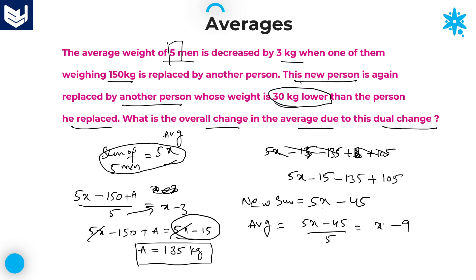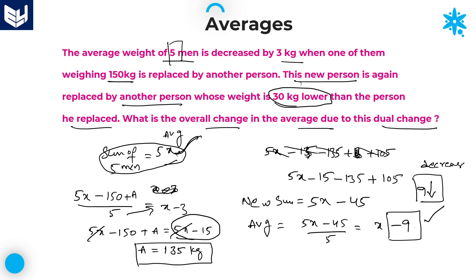If you observe carefully, the initial average is x kgs. The new average becomes x minus 9 kgs, which means the average is decreased by 9 kgs. That is the required answer. The negative sign indicates decrement.